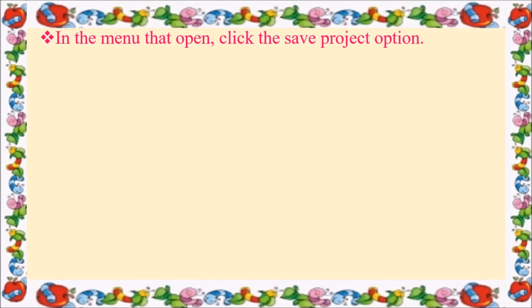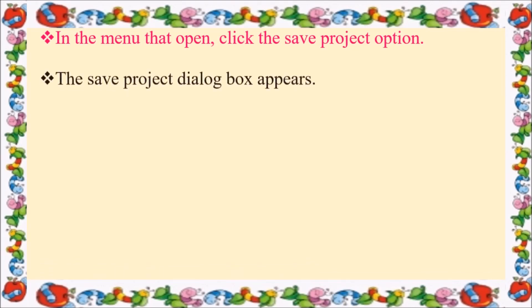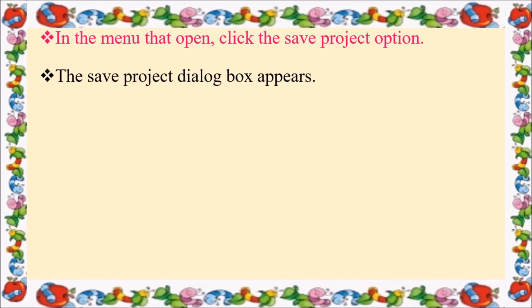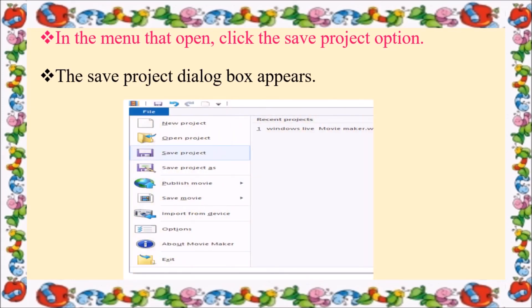You can click on the Save Project option from the file tab or Windows Live Movie Maker options. Clicking Save Project will open the Save Project dialog box. The file tab menu contains many options: New Project, Open Project, Save Project, Save Project As, Publish Movie, Save Movie, Import from Device, About Movie Maker, and Exit.